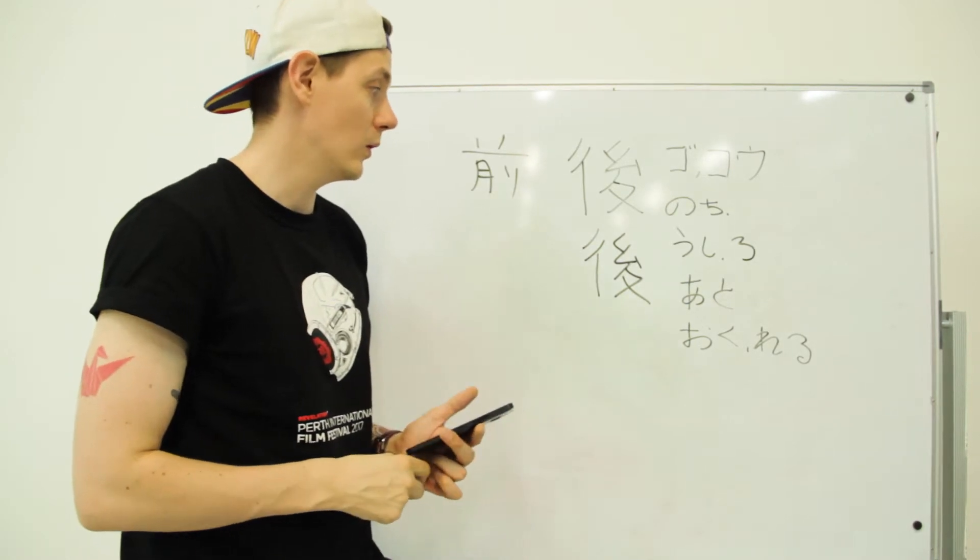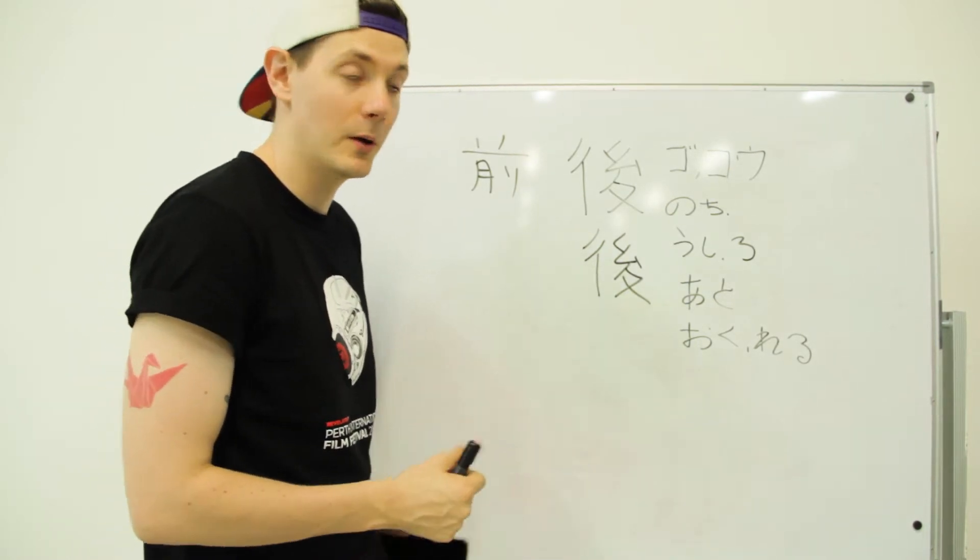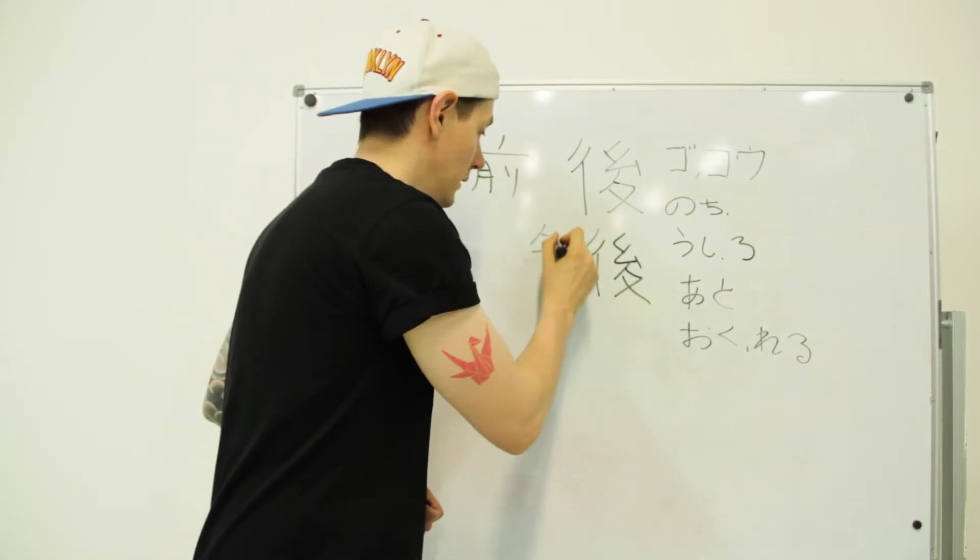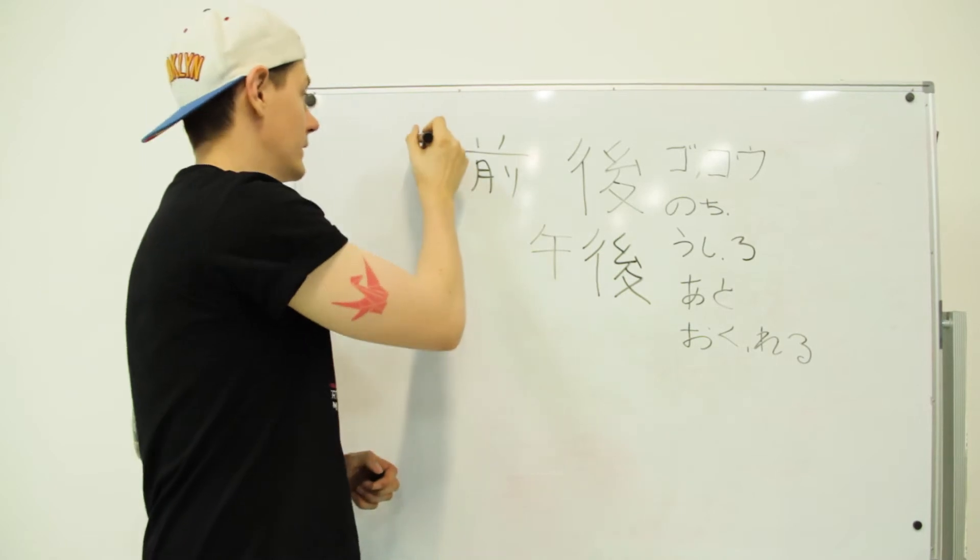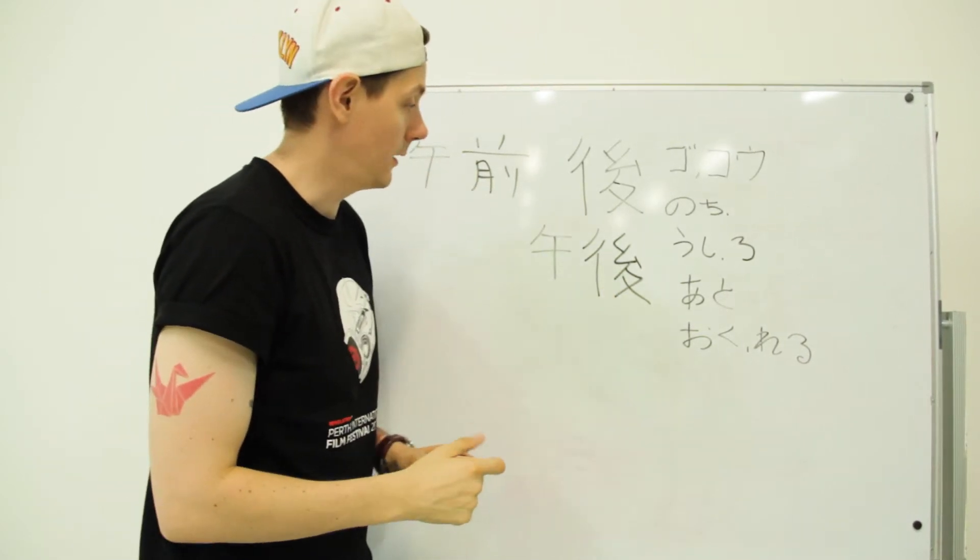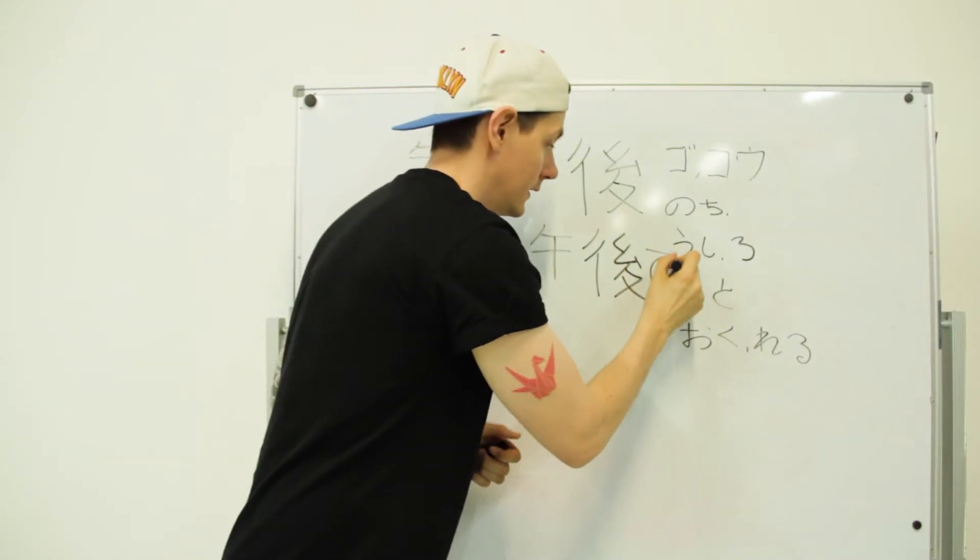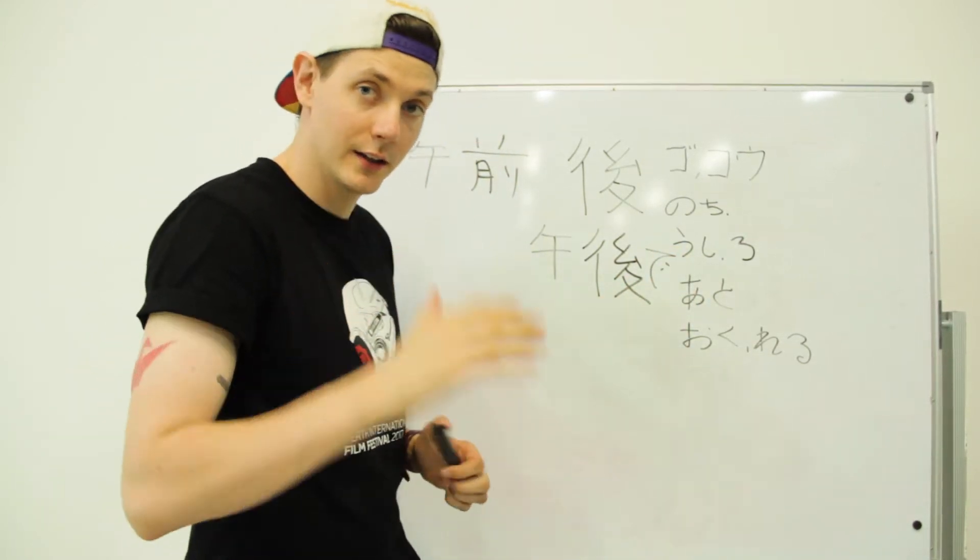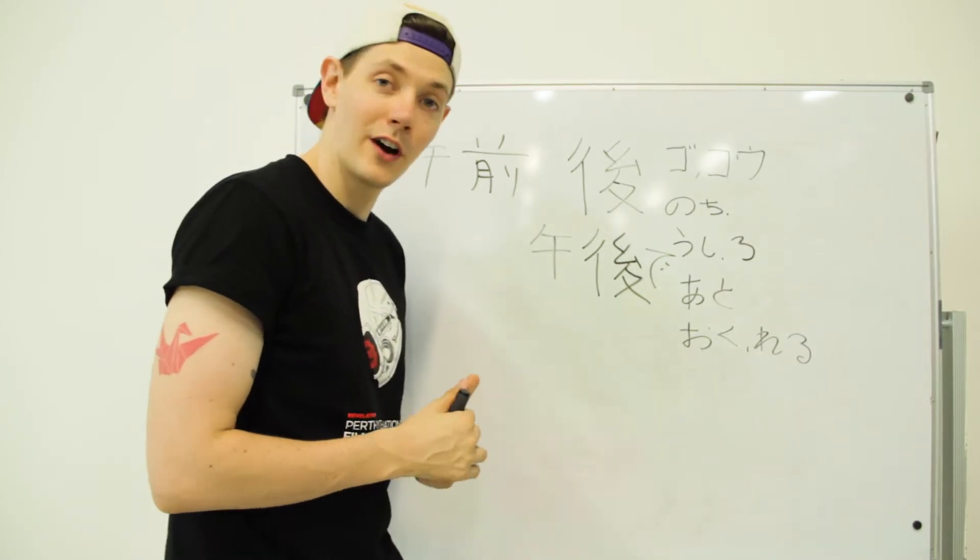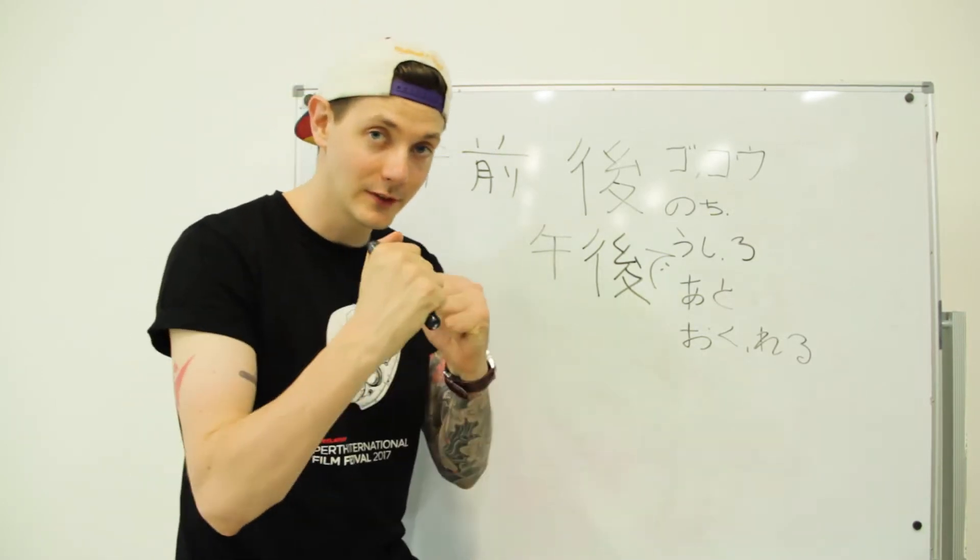There'll be considerably more complicated Kanji coming up, but for the moment, this is probably the most difficult one we've dealt with. You'll see it in things like gozen, I'm sorry, gogo, this would be gozen up here. A.M. and P.M. A lot of times the ato, ato de, ato de, later. Again, just rewrite, rewrite, rewrite and see how you go. Good luck.